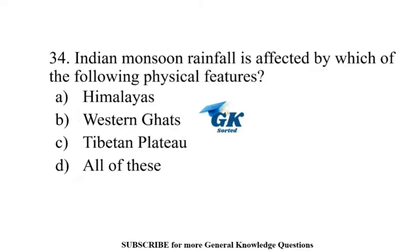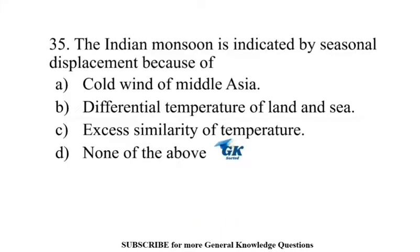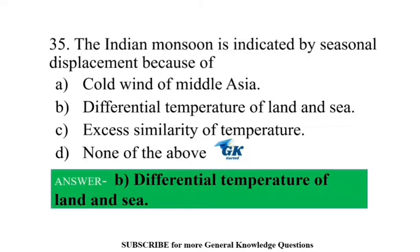Indian monsoon rainfall is affected by which physical features? All of these. Indian monsoon is indicated by seasonal displacement because of the differential temperature of land and sea.